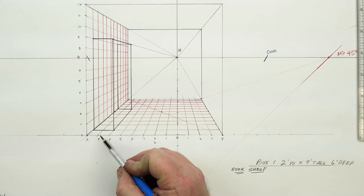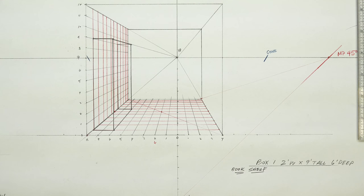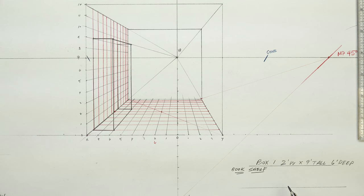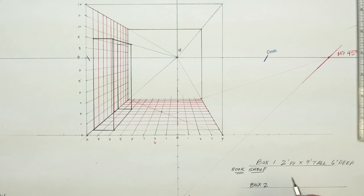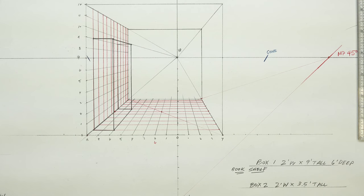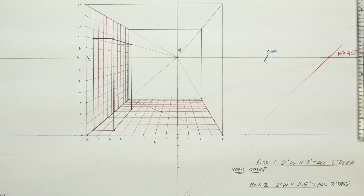It's against the wall and it's one unit off of our ground line. So we're good to go there. Now let's go for box number two. Box number two is going to be two units wide by three and a half units tall, and we're going to make it three units deep.